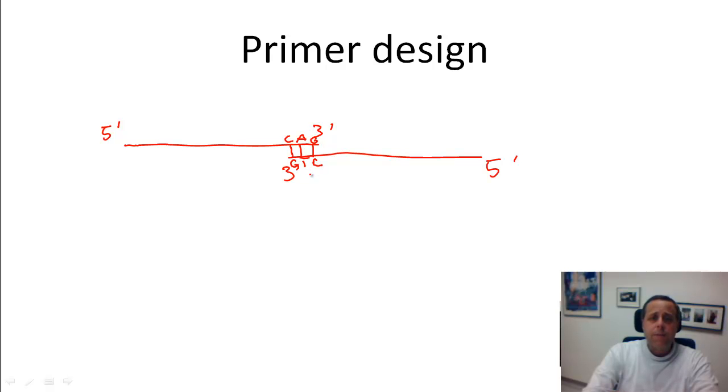So that kind of scenario will lead to primary dimerization because if then the polymerase comes in, what happens is that the primary mass will be filled in like that, and from now on this is a wonderful template for all of your subsequent reaction steps. So now this will be amplified and this will be in competition with the PCR product that you're really trying to amplify.